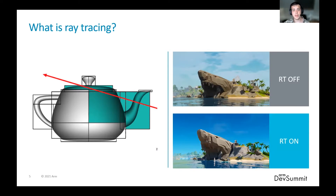If a bounding volume is intersected with, we subdivide that further until we reach a leaf node in the tree, which will be a candidate for intersection. Using these candidate intersections, we can deduce certain things such as whether a light is occluded by an object — for example, if we wanted to render a shadow.